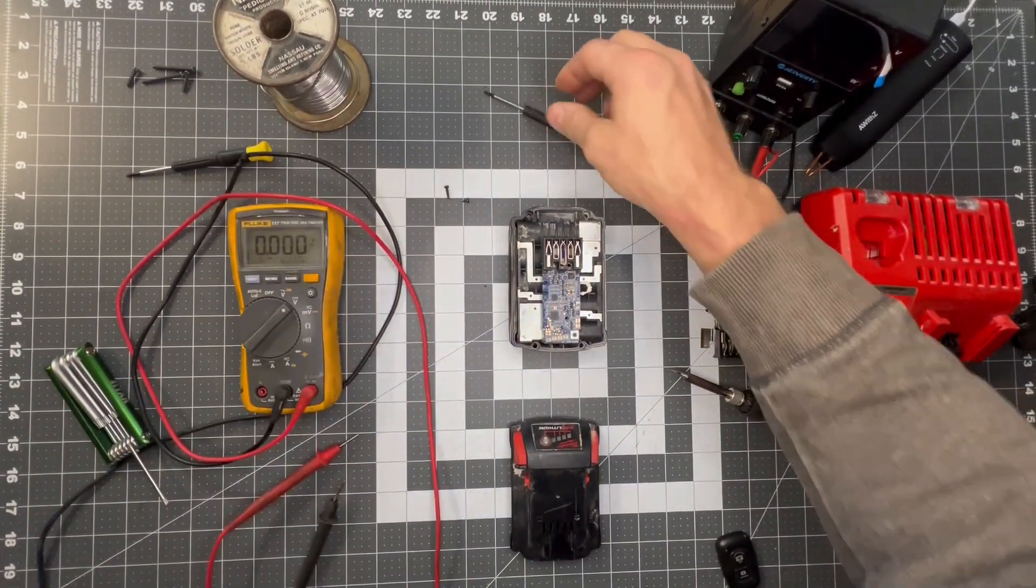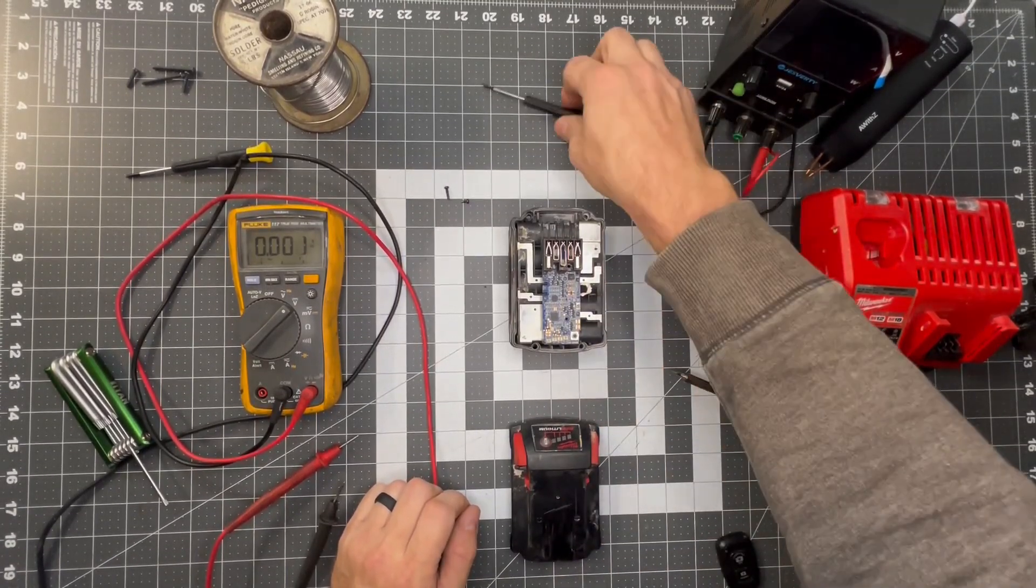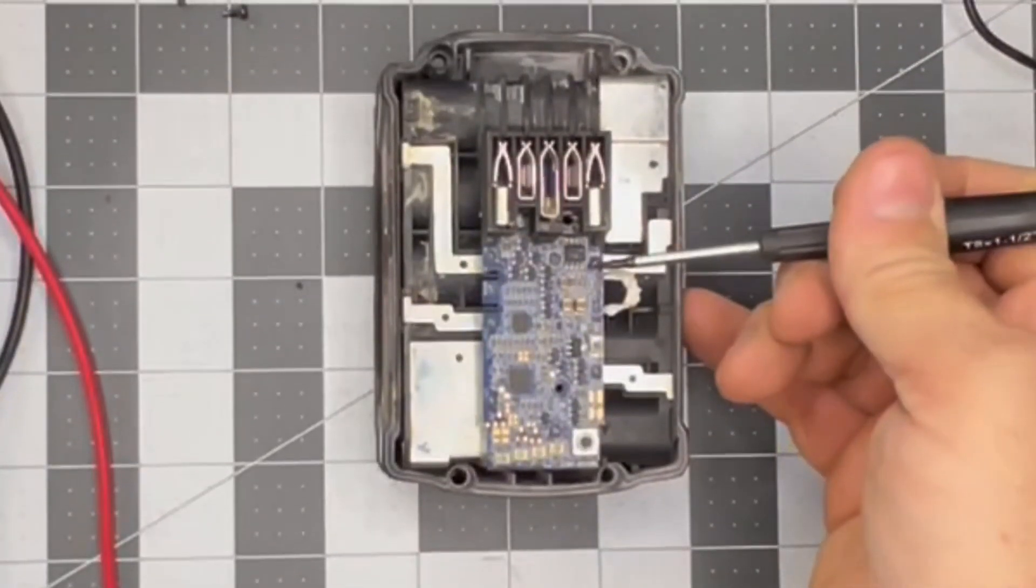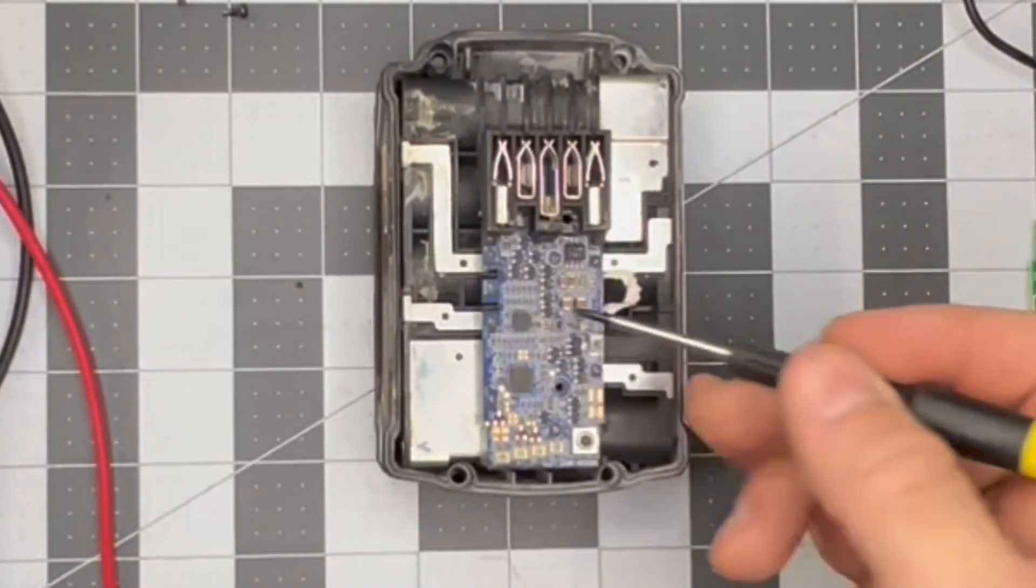Once we get those two screws out, we need to desolder four contact points. One here, one here, one here, and one here.